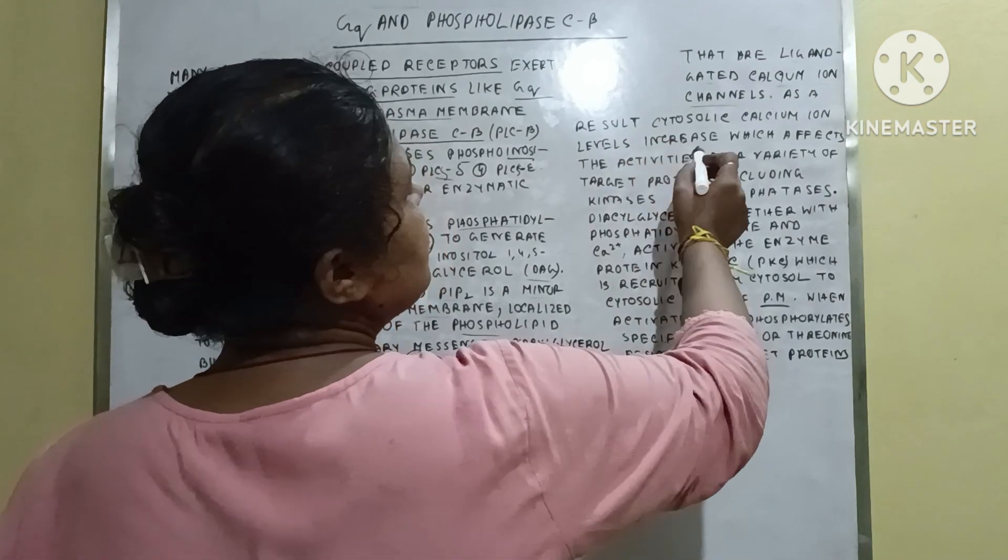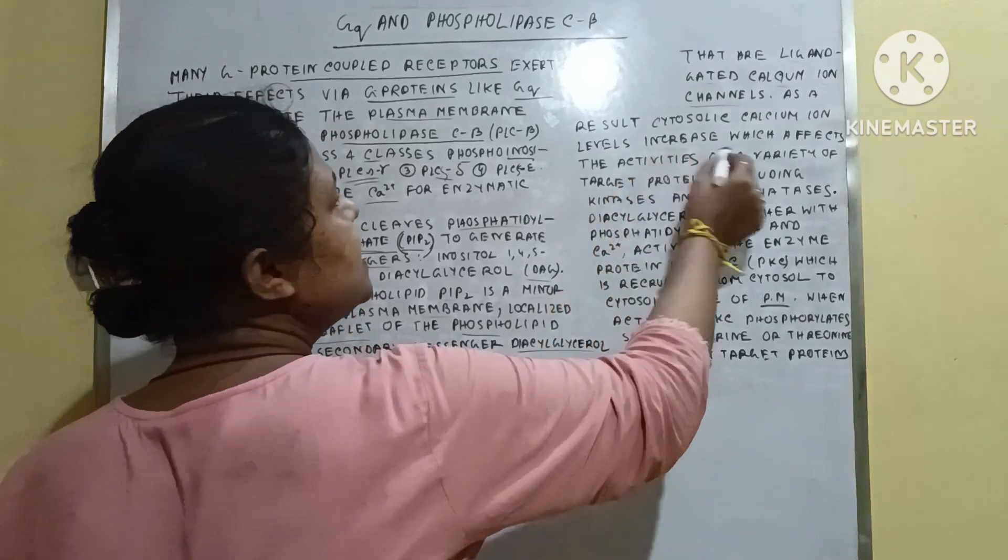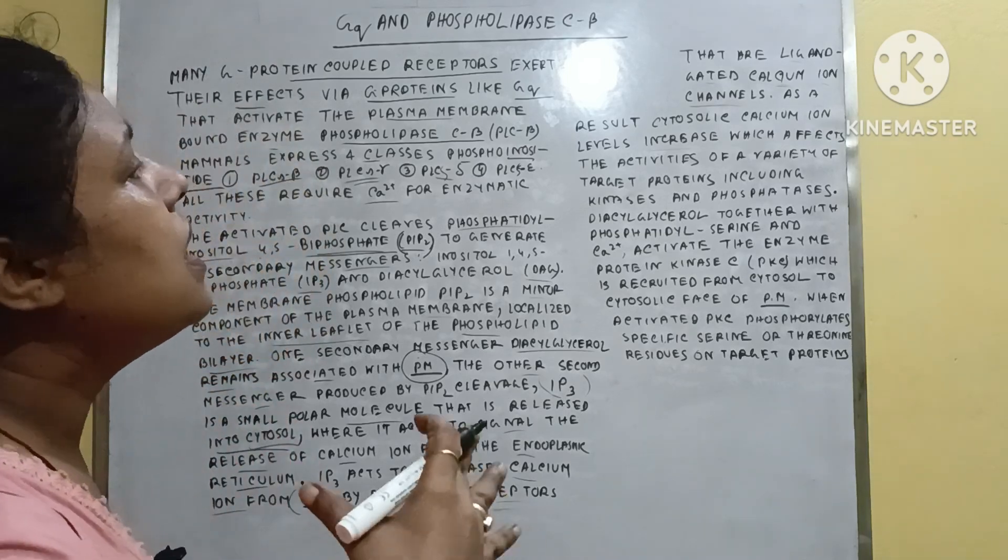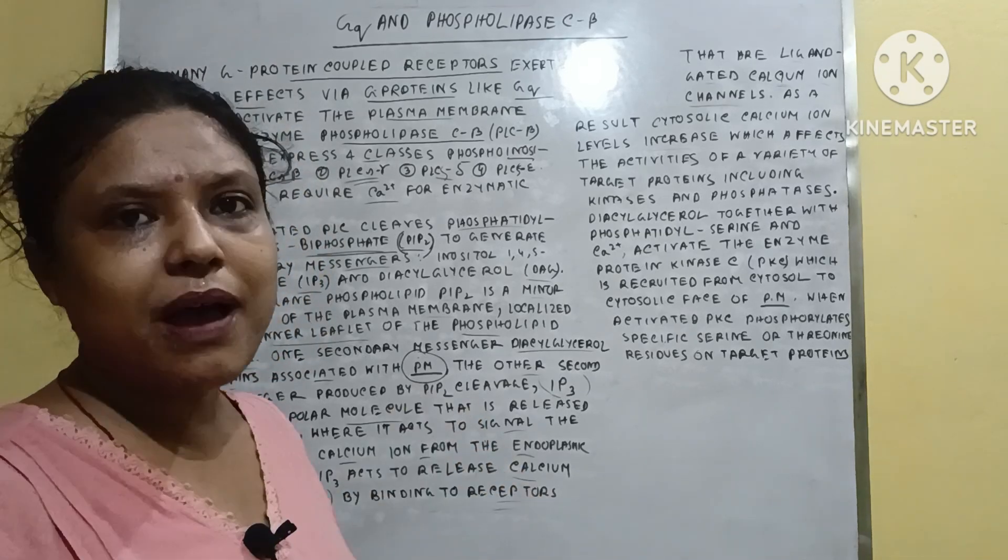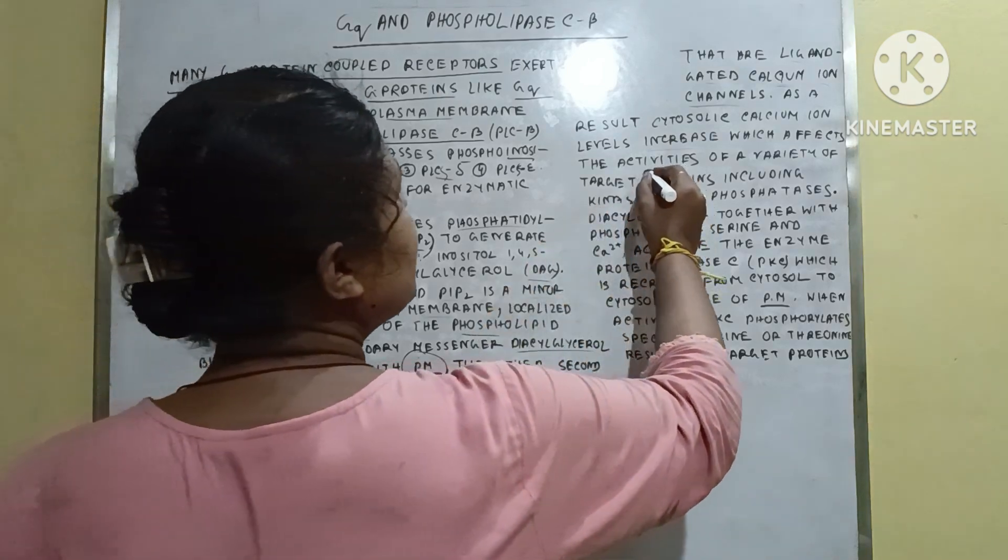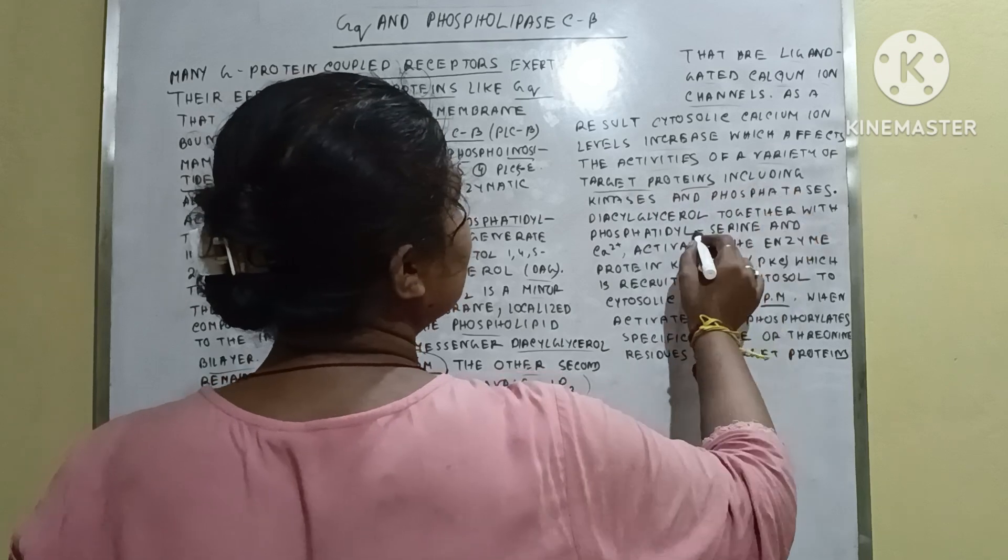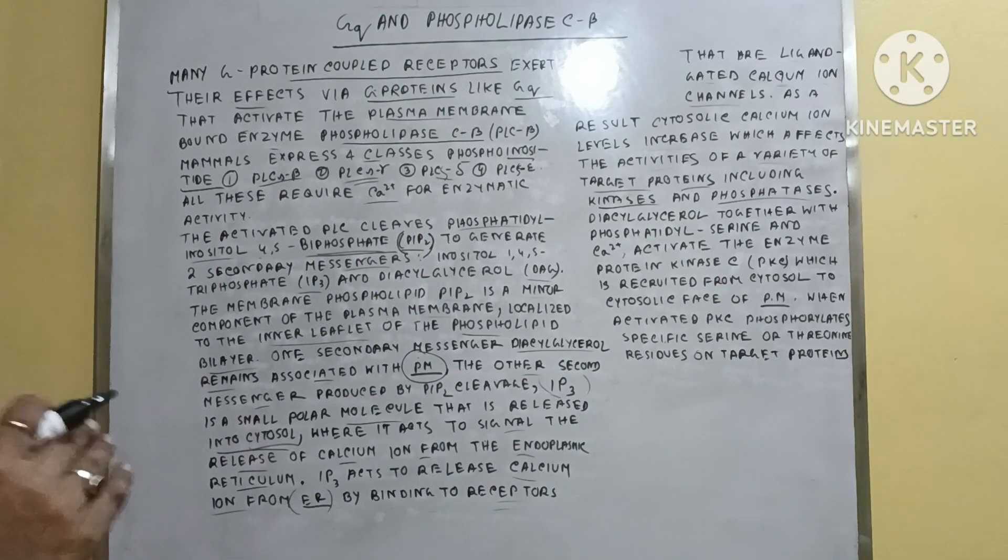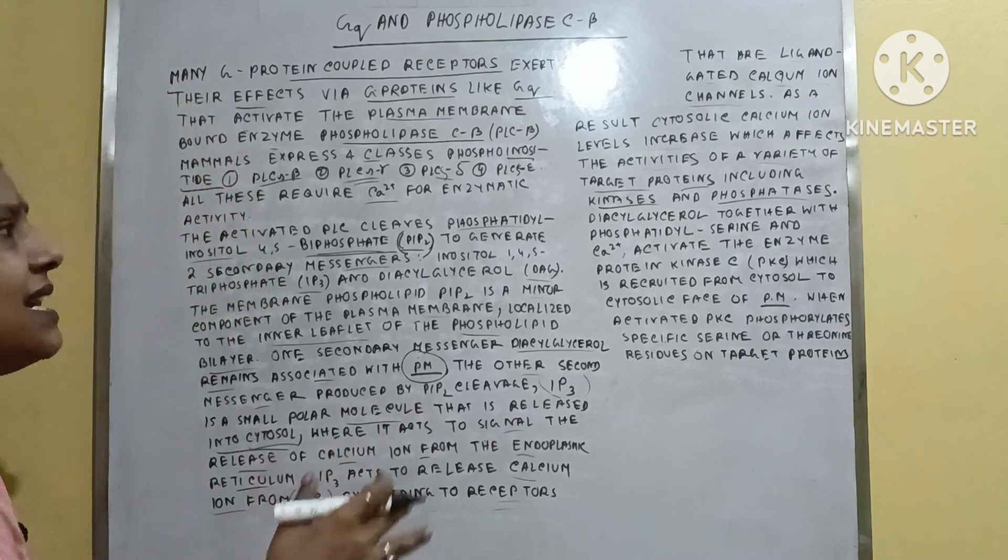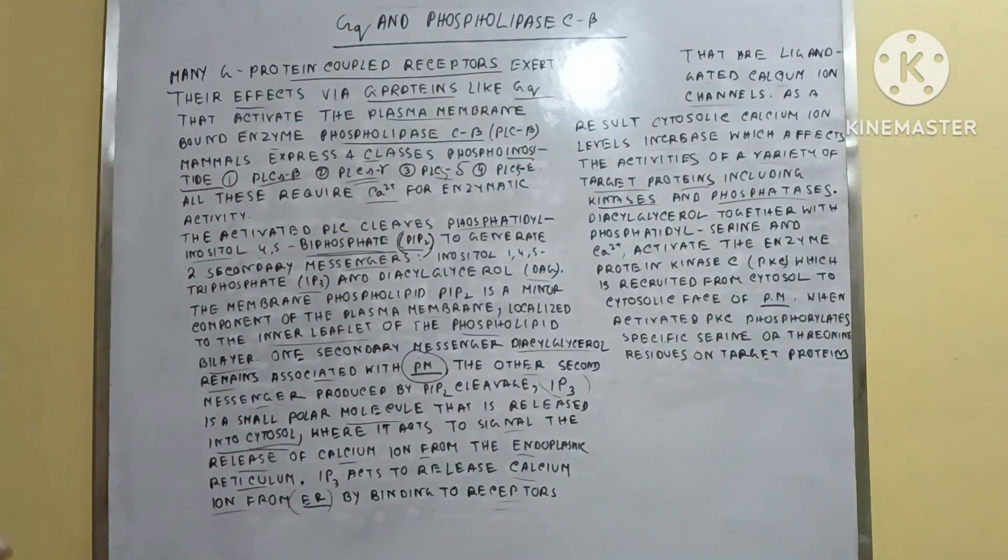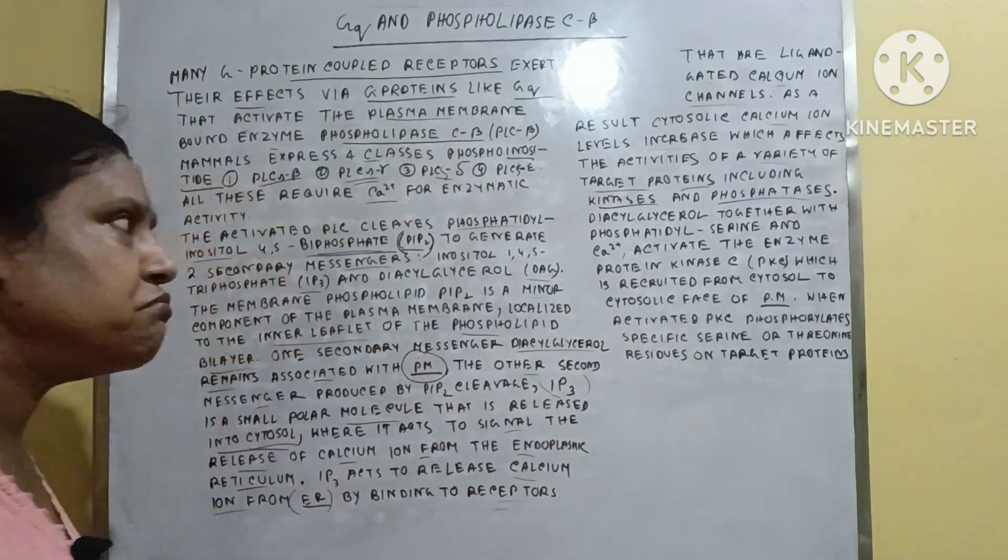As a result, cytosolic calcium ion levels increase. When calcium ion is present in the cytosol, the concentration of calcium ion increases within the cytosol, and that affects the activities of a variety of target proteins including phosphatases and kinases. This increases the activities of kinases and phosphatases. The enzyme activities are increased by the presence of calcium ion.